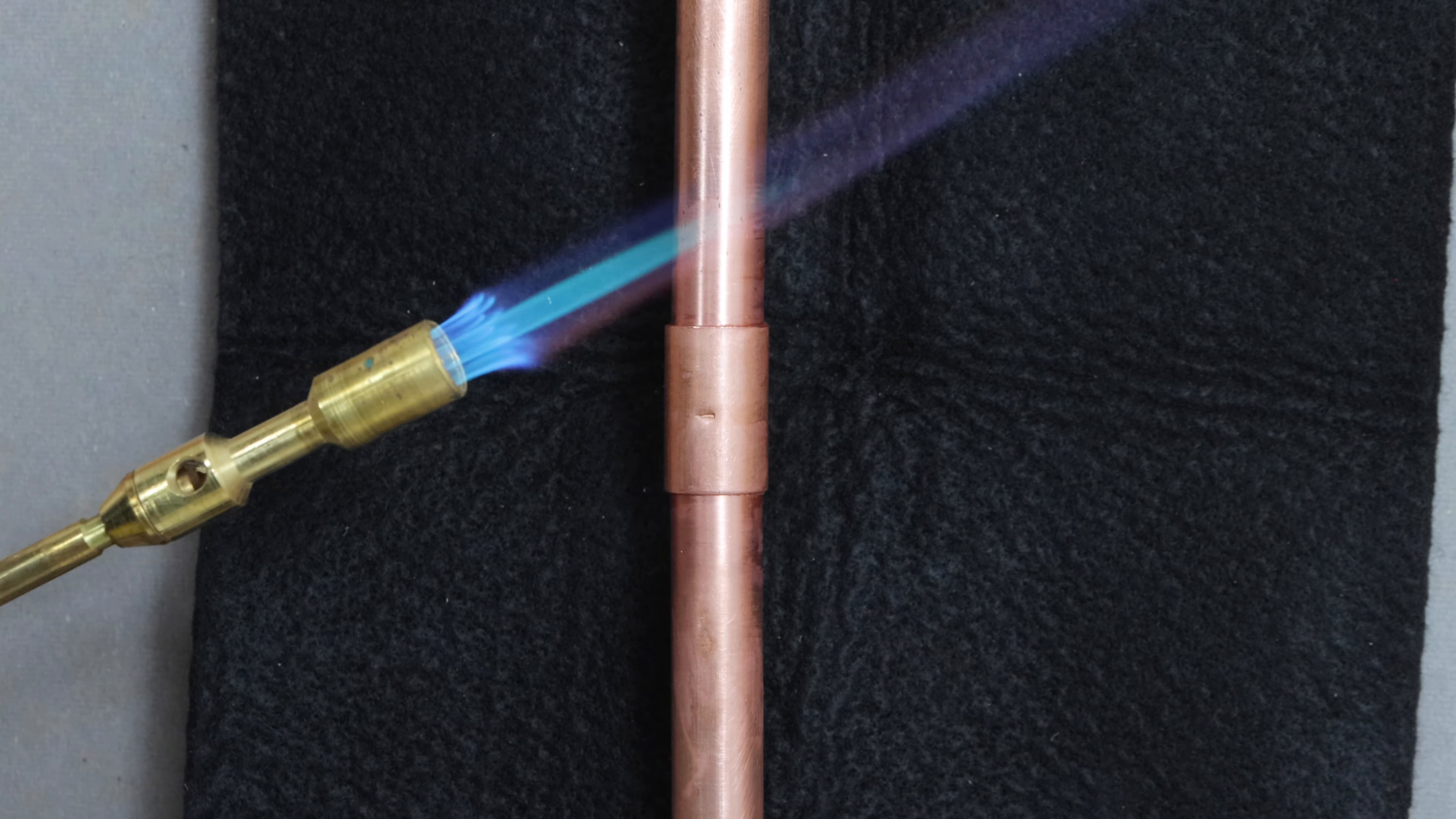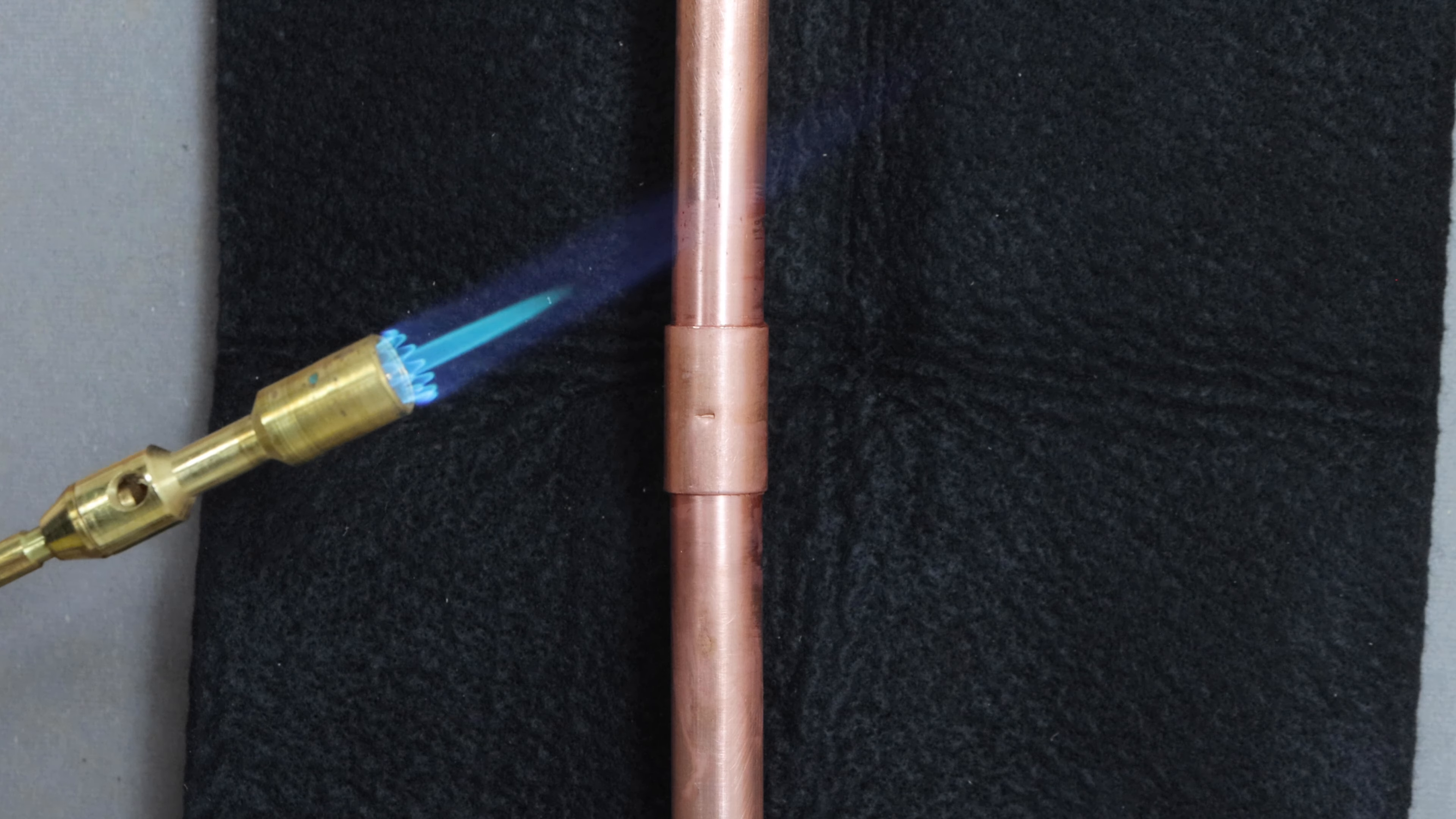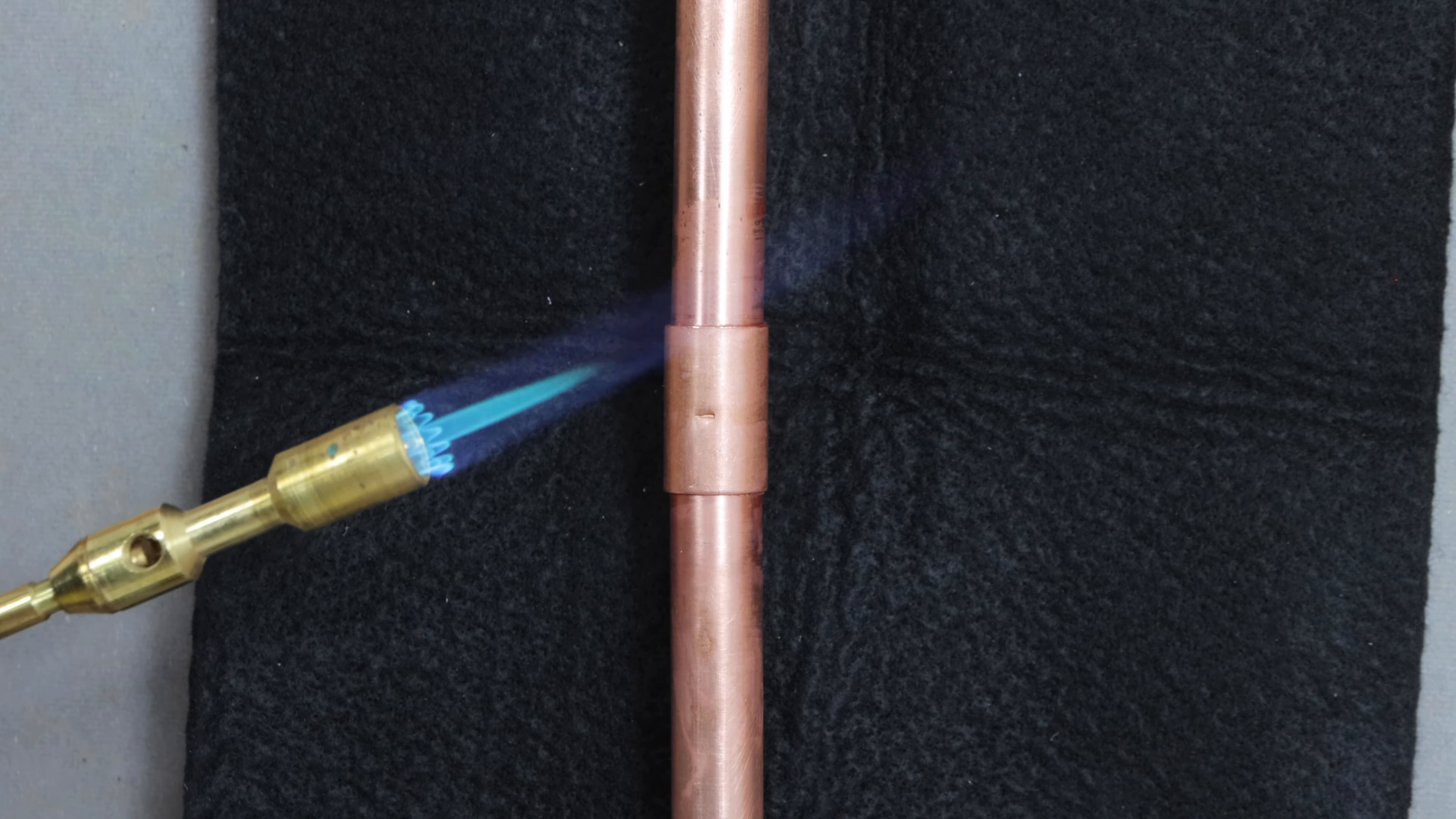I'm using a striker here to start up my torch. This is a mag torch, and I like it because you can adjust the flame. That'll help you keep things nice and safe if you're soldering inside a wall. The flame is only about an inch and three quarters.